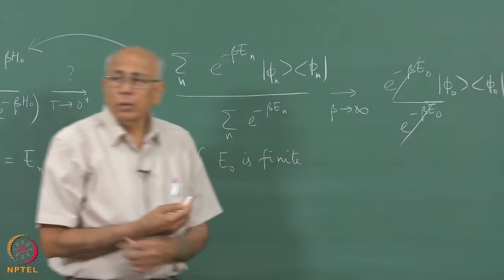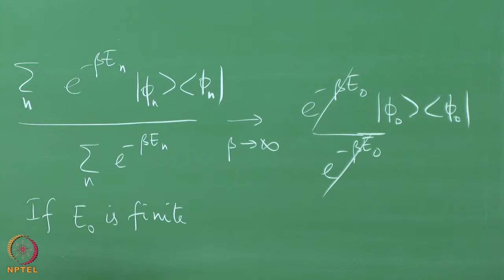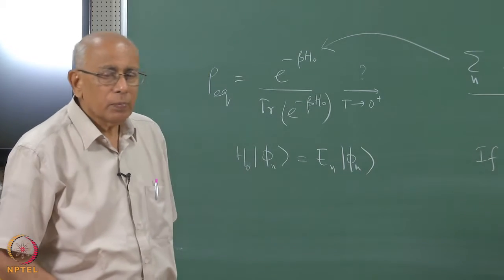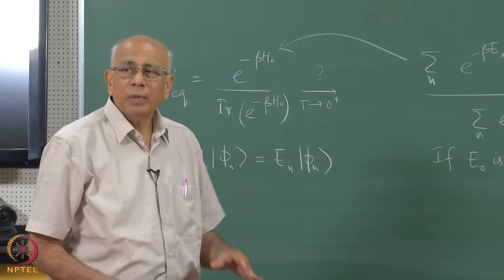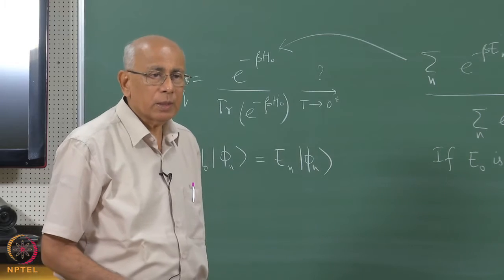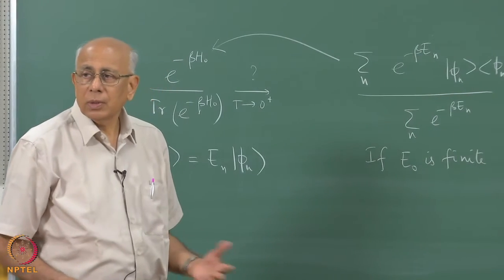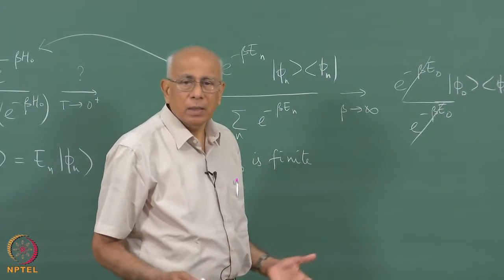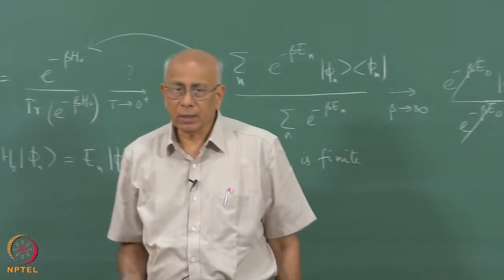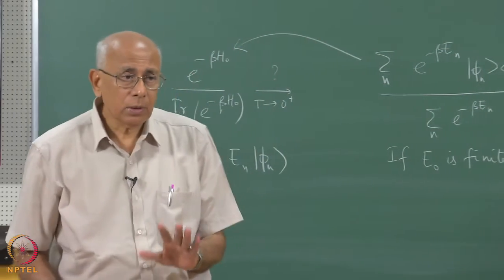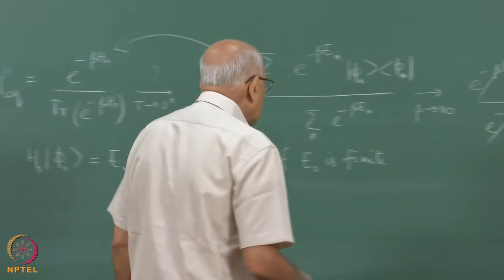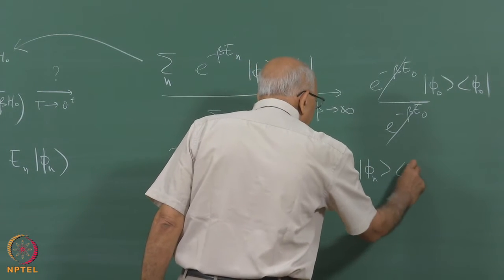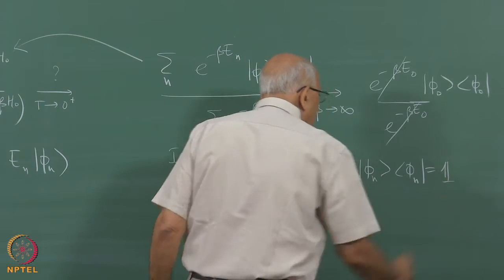As beta tends to infinity, the density operator tends to e to the minus beta E-naught times |phi-naught><phi-naught| divided by e to the minus beta E-naught, since all other terms have decaying exponentials and go to zero — they cancel out. So it tends not to the unit operator, but to the projector onto the ground state, as it should, because the system goes to its ground state at absolute zero of temperature. The probability of being in any higher state is essentially zero, and the system is with probability one in the ground state.